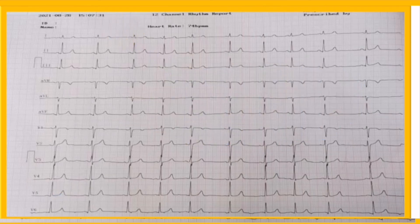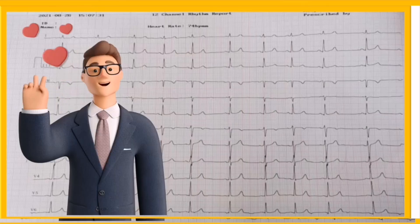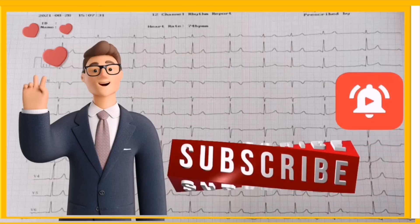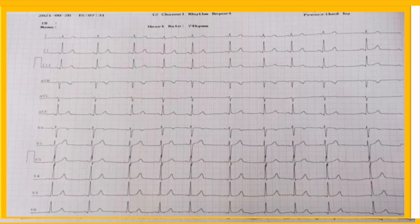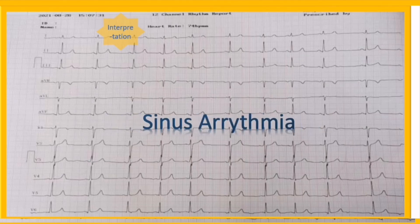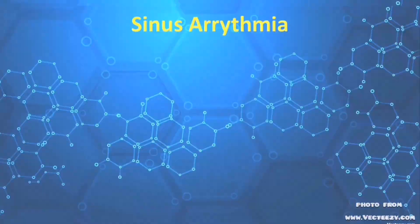Our last step is overall interpretation. To interpret our EKG properly, we are supposed to make a list of abnormal findings. In this strip, the only abnormal finding we have is the irregularity in heart rhythm. Therefore, our EKG shows sinus arrhythmia. Let's have a brief overview of sinus arrhythmia and its clinical significance.